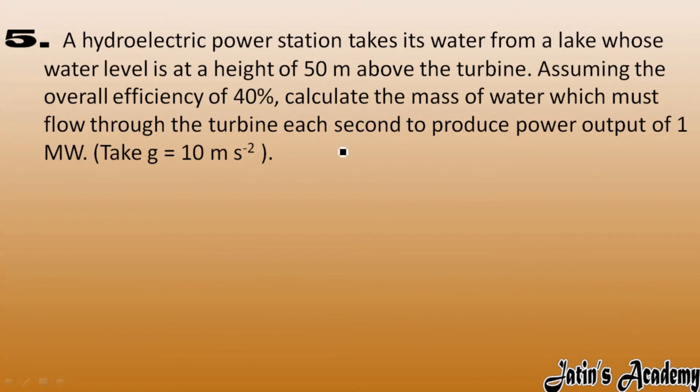Now we have to calculate the mass. So here energy we have already calculated as 2.5 into 10 raised to power 6 joule. And this energy is actually stored in the water in the form of potential energy. So potential energy we have 2.5 into 10 raised to power 6 joule. Now we have to calculate mass. We know that potential energy formula we have MGH. Potential energy is 2.5 into 10 raised to power 6. Mass value we have to calculate, G value is 10 and H value is height 50 meter.